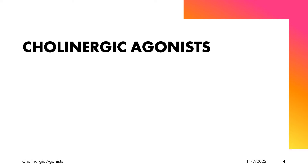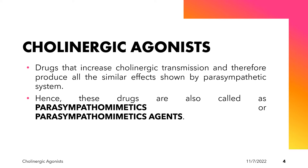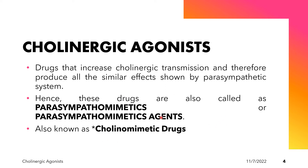Cholinergic agonists are drugs that increase cholinergic transmission and therefore produce all the similar effects shown by the parasympathetic nervous system. Hence, these drugs are also known as parasympathomimetics or parasympathomimetic agents. Parasympathomimetic is a term used specifically to describe an acetylcholine-like effect on effector cells innervated by postganglionic neurons of the parasympathetic nervous system. Another synonym for cholinergic agonist is cholinomimetic drugs.